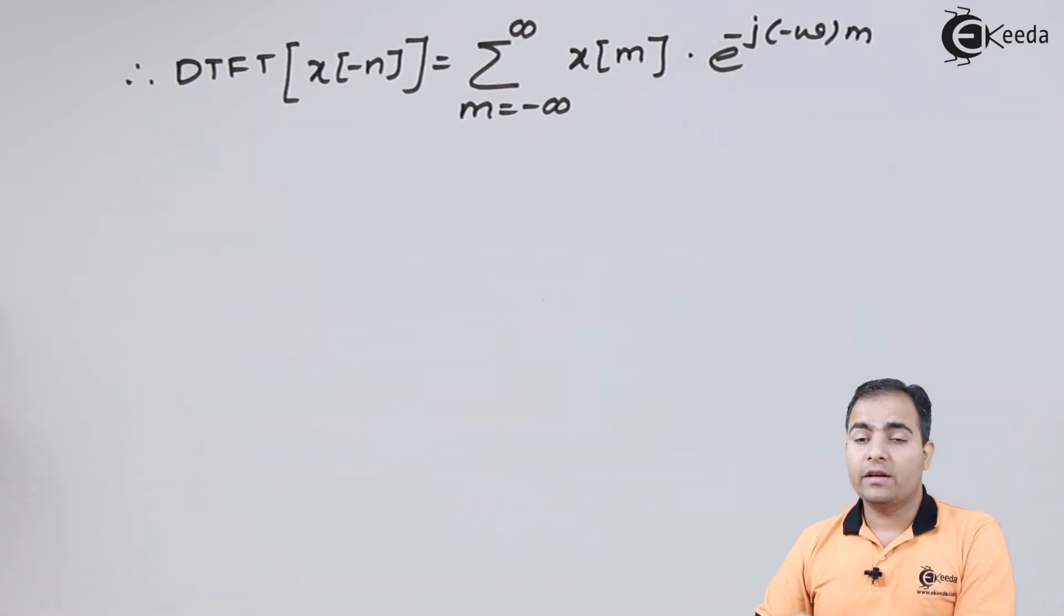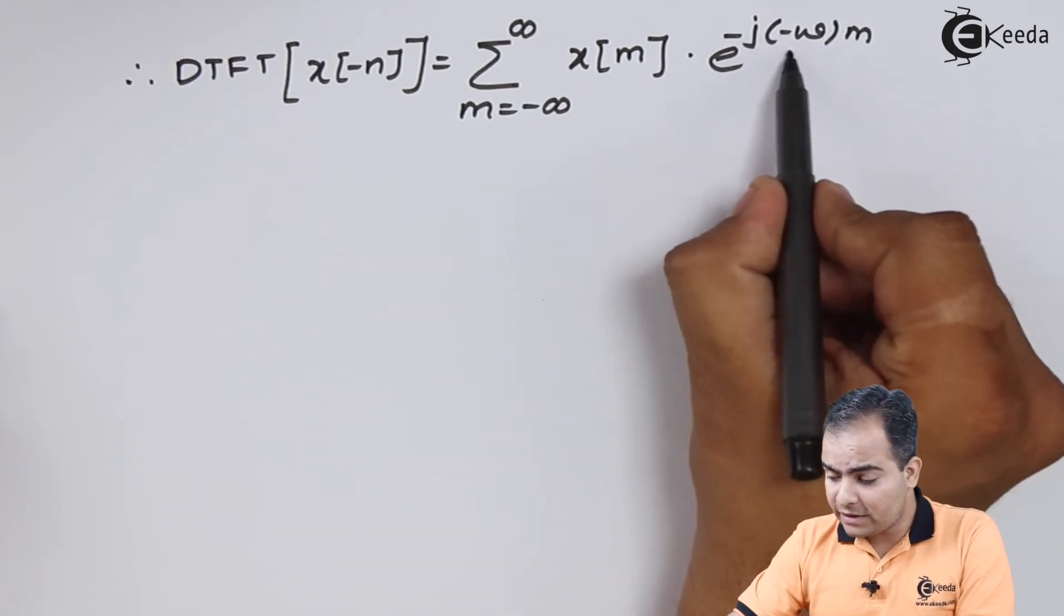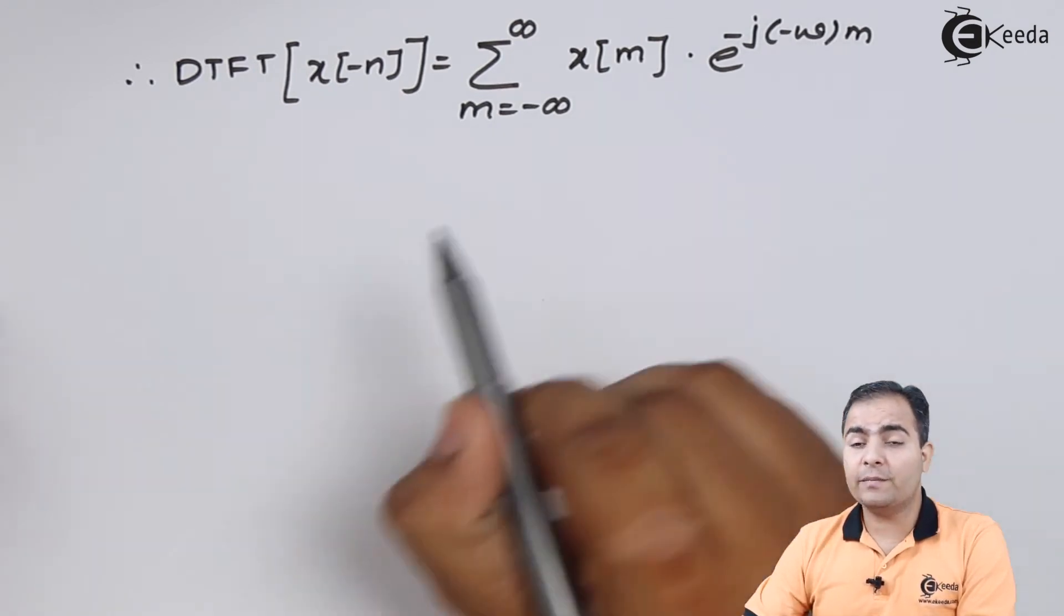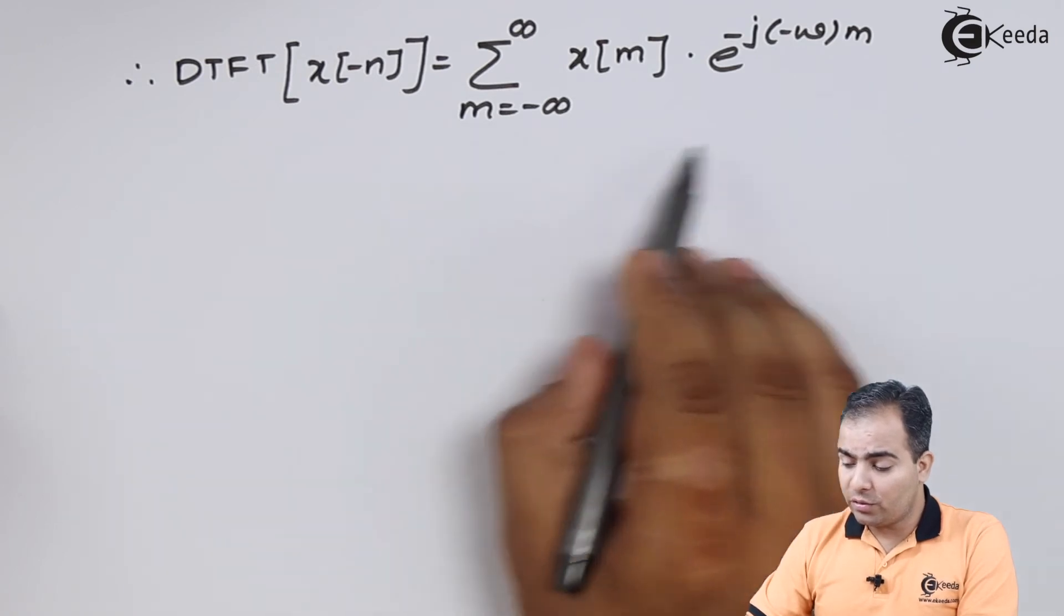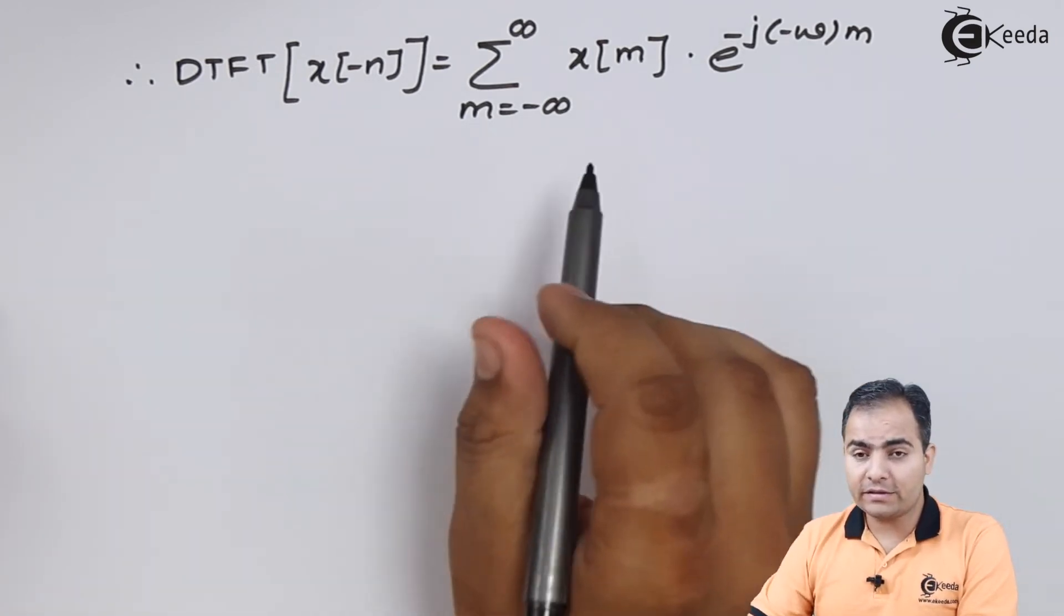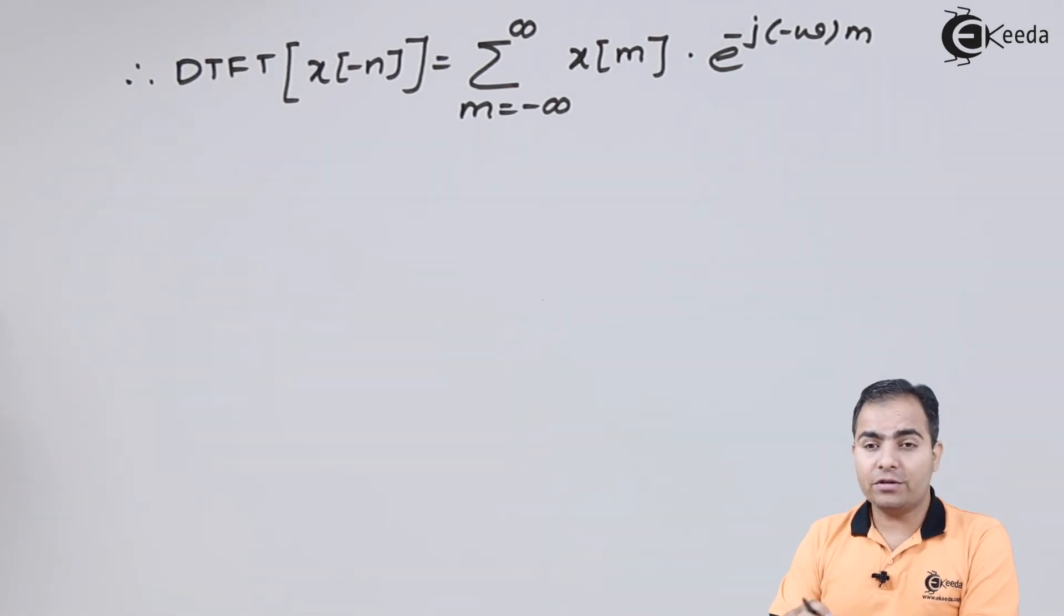Now, what I have done is I have taken a minus sign common from omega, so that's why this omega is carrying a minus sign. Now suppose if I consider this minus omega is nothing but my omega, then this whole definition or this whole equation will act as a definition of DTFT, that is discrete time Fourier transform.